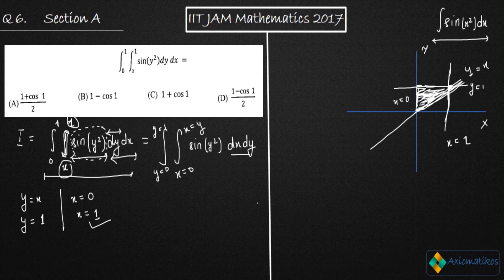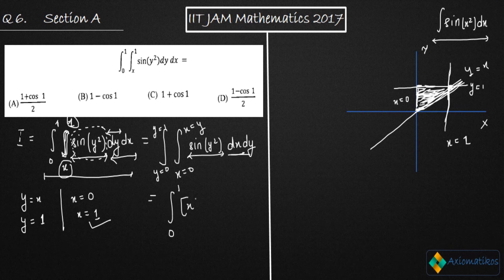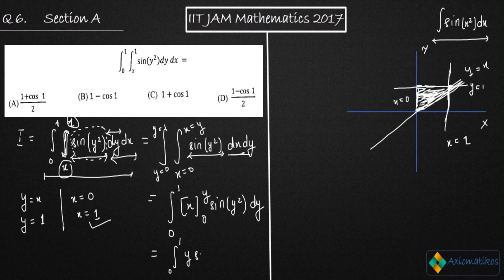Now let us see how to solve this integral. If we integrate with respect to x, sine of y squared is constant. So the integration of dx gives x, and applying limits from 0 to y we get the integral from 0 to 1 of y times sine of y squared dy. This is very easy to integrate.